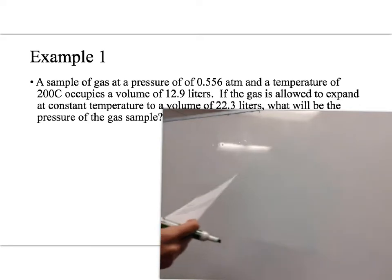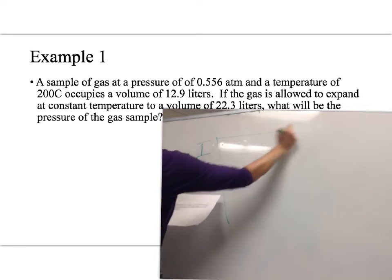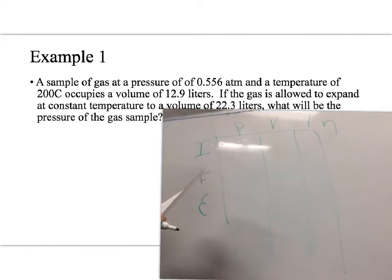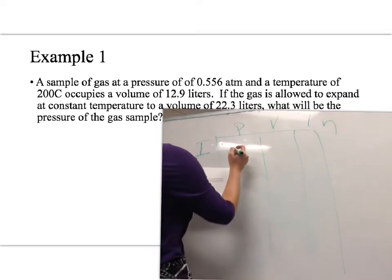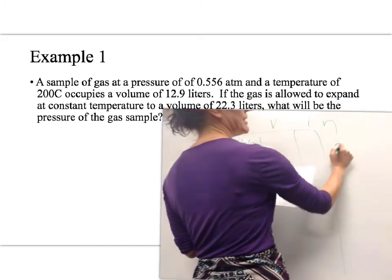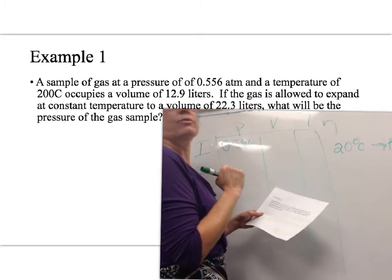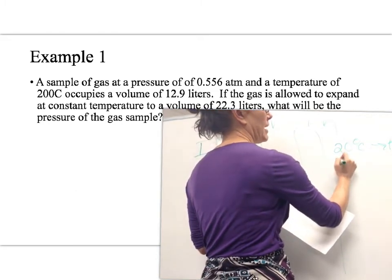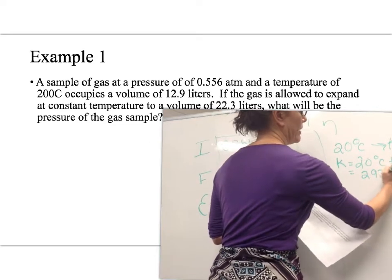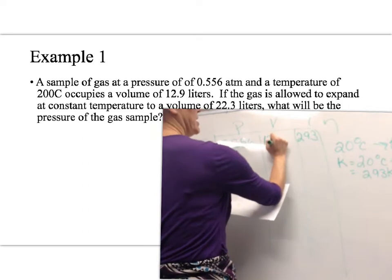Let's look at an example of how to solve a PVTN problem. The first thing you have to do is draw your IFE chart. The problem says: a sample of gas at a pressure of 0.556 atm — that's my initial pressure — at a temperature of 20 degrees Celsius. We have to convert it to Kelvin using the formula: Kelvin equals 20 degrees Celsius plus 273, giving 293 Kelvin. That's my initial temperature. It has a volume of 12.9 liters — that's my initial volume.